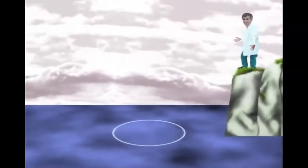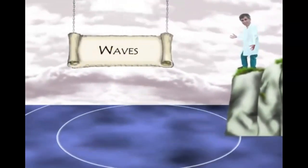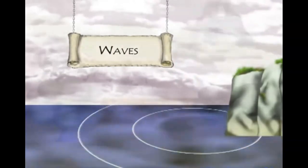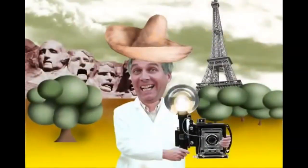All waves travel outward from a source. A stone dropped in a pond, for instance, will produce waves that move out in a circular pattern from the splash. Light works the same way. When a camera flashes, light waves move out from the flash bulb.